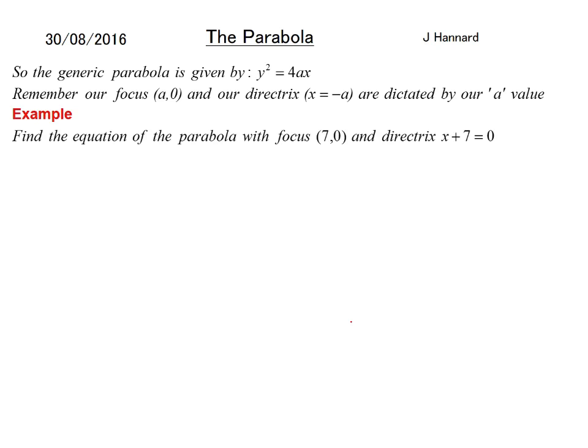So an example then. Find the equation of the parabola with a focus of (7, 0), and a directrix x plus 7 equals 0. Don't be confused by that because you can just take that over the other side and it'll be x equals minus 7, of course. So our a must be a 7. And 4 times 7 is 28. So the equation is simply y squared equals 28x. Because remember the generic parabola equation is 4ax. So it's just 4 lots of our a, which is 7.